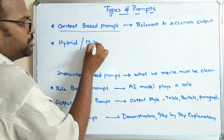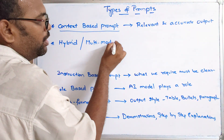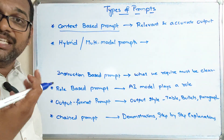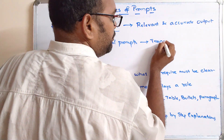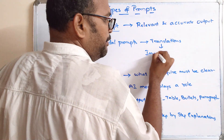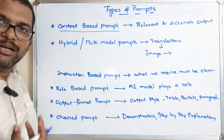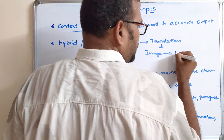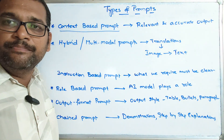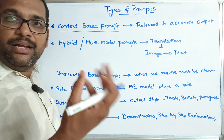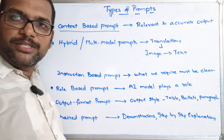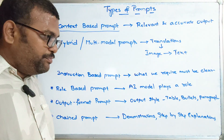The final type is hybrid or multi-modal prompts. This means translating one kind of data to another. For example, you can upload an image and ask about the content of that image to get text, or you can give text and ask to generate an image. When more than one type of data is used, we call it a hybrid or multi-modal prompt.